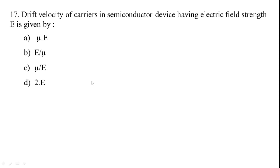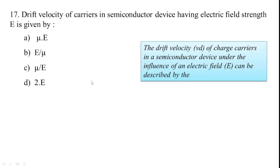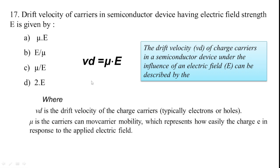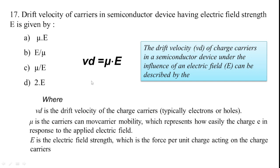Question 17: Drift velocity of charge carriers in a semiconductor device having electric field strength E. The drift velocity vd equals mu times E, where vd is the drift velocity of charge carriers, mu is the carrier mobility representing how easily charges move in response to the applied electric field, and E is the electric field strength. Option A is correct: vd = μE.